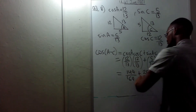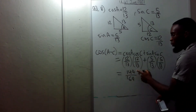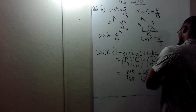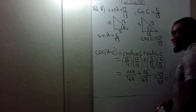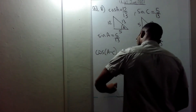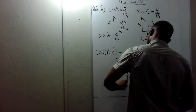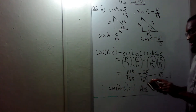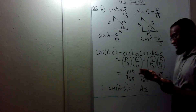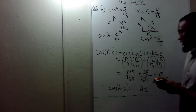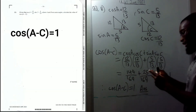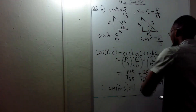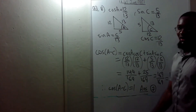That gives 144/169 + 25/169 = 169/169 = 1. Therefore cos(a − c) = 1. They're giving 7 marks for that — we literally didn't do much but got 7 marks.